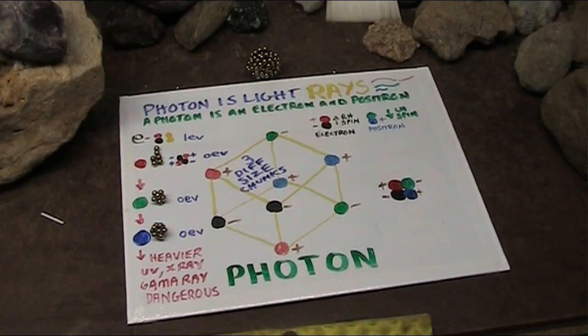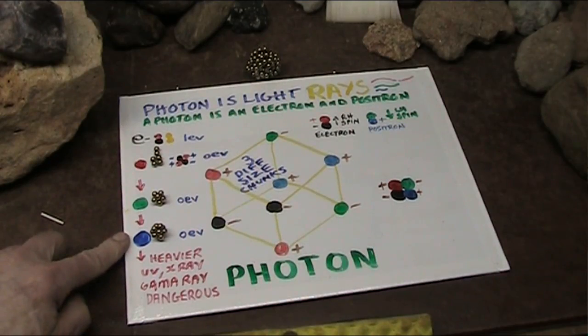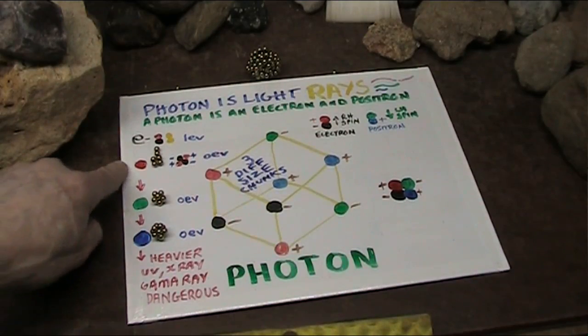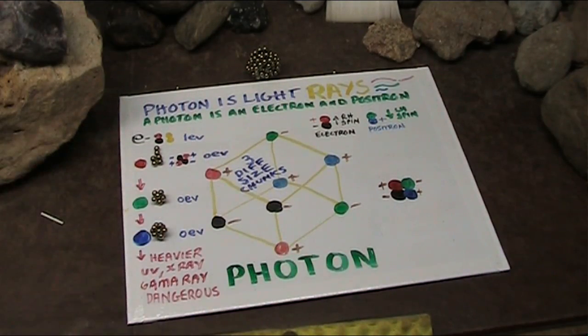All right. Now we're going to go into Crook's radiometer. Now that you understand what light is, the heavier particles hit, they do more impact. This one here? Yeah, it can hurt you. This one here? No big deal. It's a puppy. All right. So let's go into Crook's radiometer.